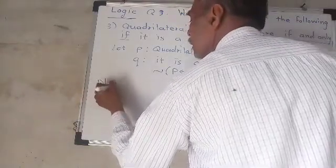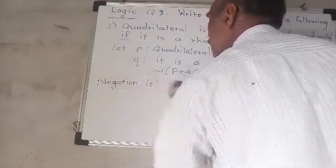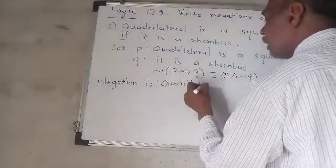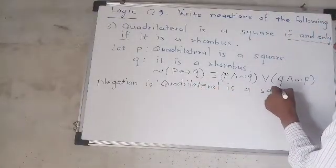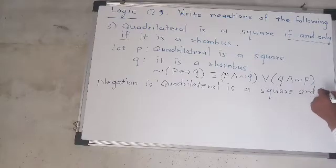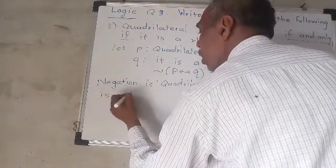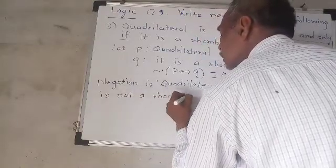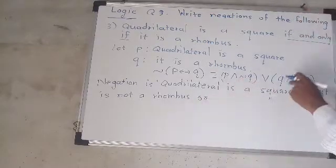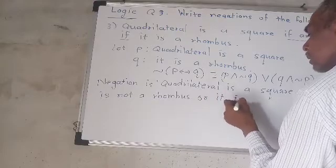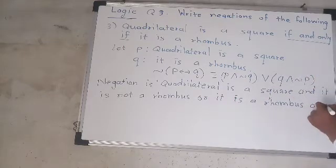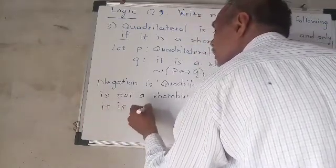Then the negation is: quadrilateral is a square and it is not a rhombus (negation Q: it is not a rhombus), or it is a rhombus and it is not a square.